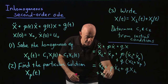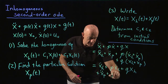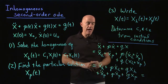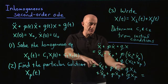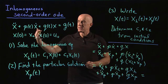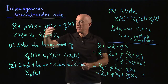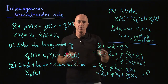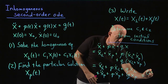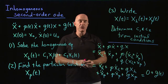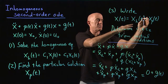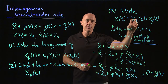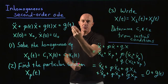plus the other grouping: xp double dot plus p of t times xp dot plus q of t times xp. The first group is the differential equation for the homogeneous solution — that equals zero, because when you put the homogeneous solution into the homogeneous equation you get zero. The second group is the differential equation for the particular solution — that equals g of t. So the sum of the homogeneous solution plus the particular solution solves the inhomogeneous equation because the homogeneous part goes to zero and the particular part goes to g of t. This works because the equation is linear in x.